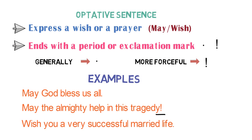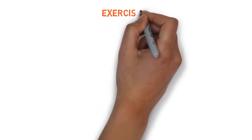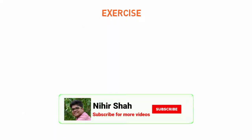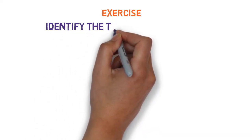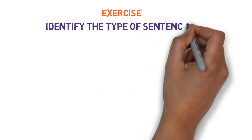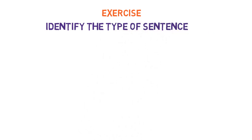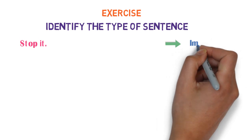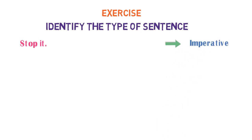Now, this is the end of this chapter. There is no exercise given in the book, but I have created a short exercise to validate if you have learned the things properly. The question is: identify the type of sentence from the sentences given below. I will give you one example: 'Stop it.' — as it is an order, it is an imperative sentence. Now, identify the next set of sentences and provide your answer in the comments.